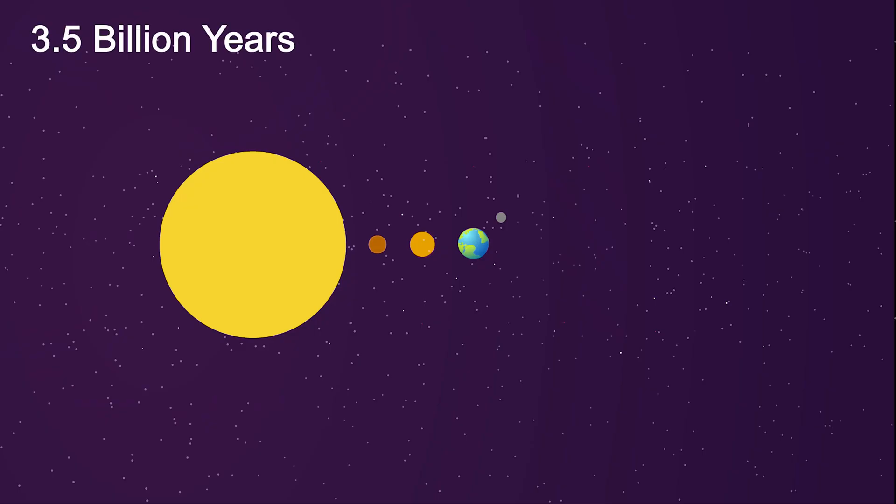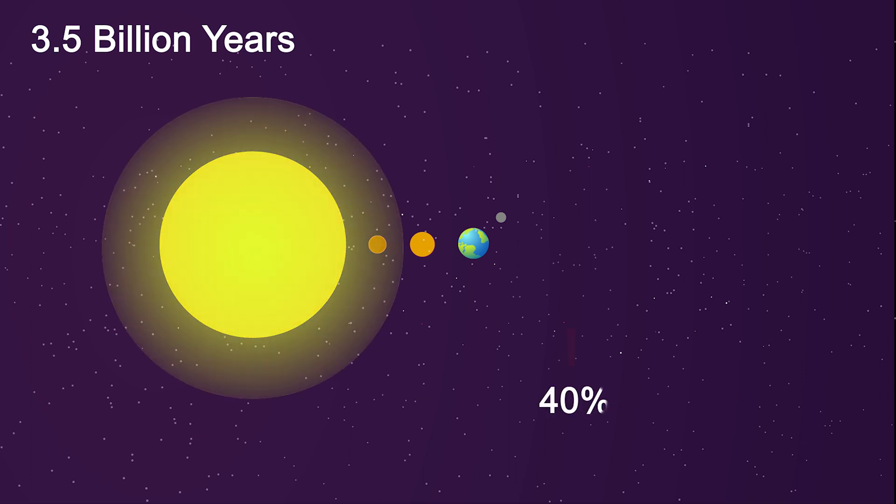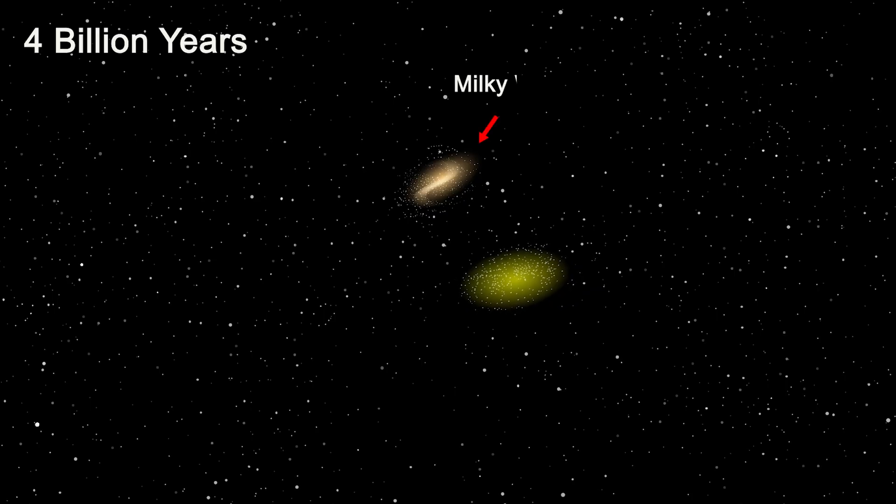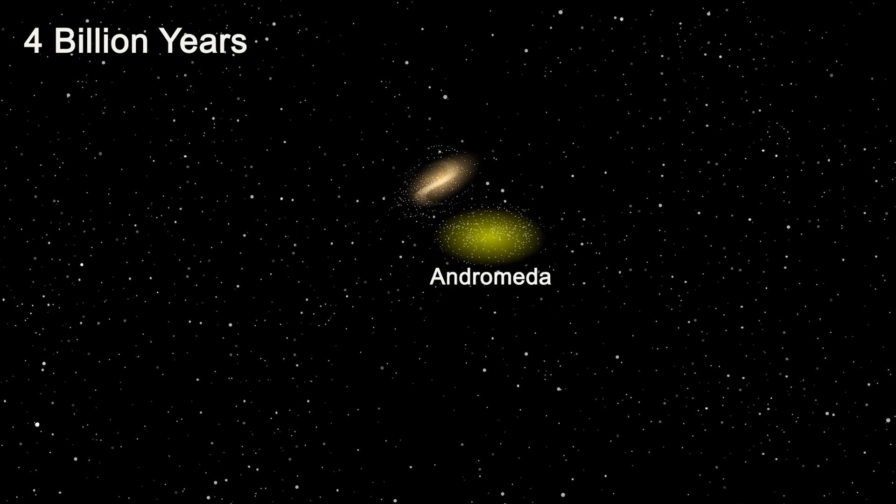In 3.5 billion years, the sun will be 40% brighter than it is today, increasing its temperature to around 6,000 degrees Celsius. In 4 billion years, our entire galaxy undergoes a dramatic transformation. This galaxy will collide with ours and will begin the process of merging together to form one united galaxy.